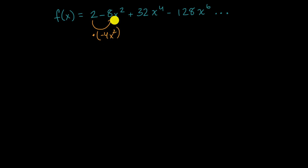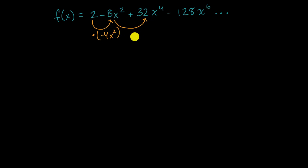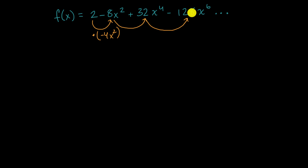If you multiply negative eight x squared times negative four x squared: negative four times negative eight is positive 32, and x squared times x squared is x to the fourth. That works. And then multiplying that by negative four x squared gives negative 128 x to the sixth.